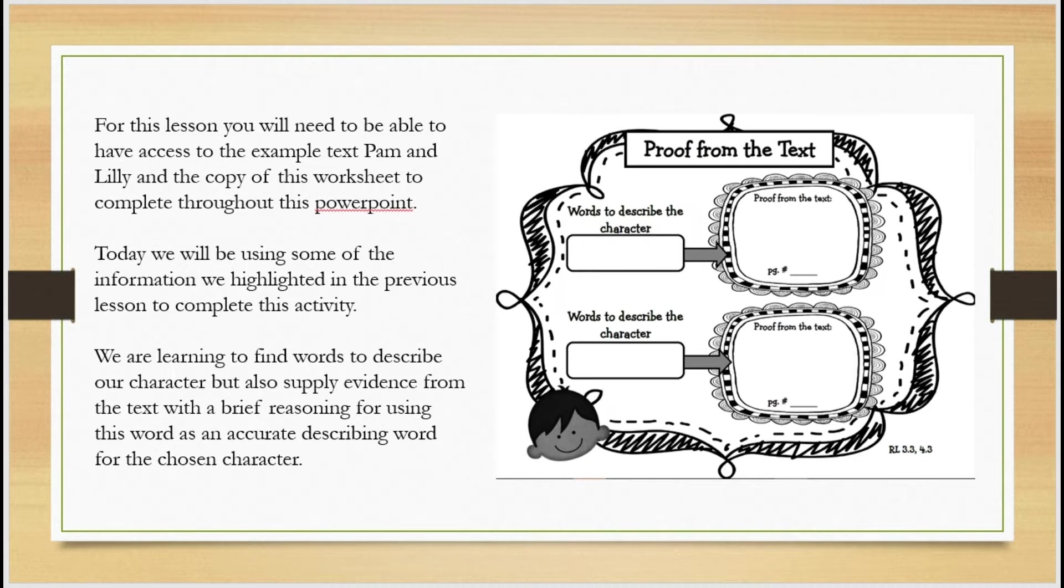We're going to be skipping and scanning the text again to find evidence to support why we've used a certain word to describe a character. This evidence might be specific words in the text or it might be a group of words that we then use our own knowledge to become a reason as to why that word describes that character.